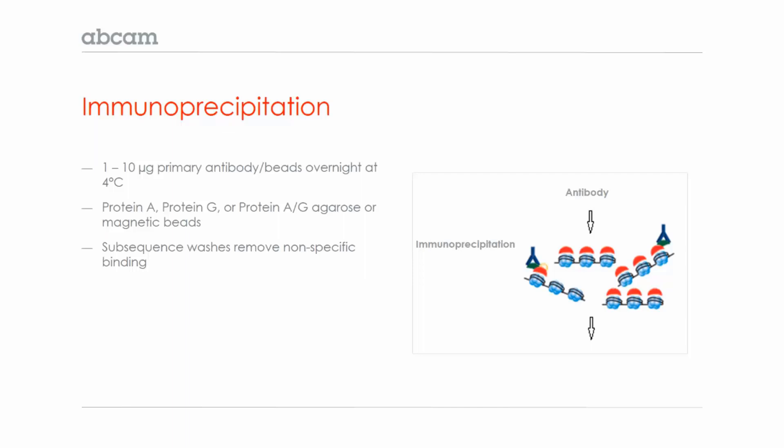Next, you add protein A, G, or a combination of protein A and G beads that will bind to the antibody. These can either be agarose, which you'd centrifuge, or magnetic, which would be pulled down in a magnetic tube rack. Next, there are several wash steps to remove nonspecific binding.